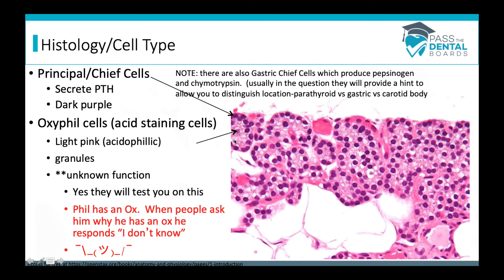Then we have the oxyphil cells, which are acidophilic or acid-staining. They contain granules, and their function is unknown. I've seen exams literally test on the function of oxyphil cells — you just have to know the function is unknown. The way I remember this: I think of a guy named Phil with an ox. When people ask why he has an ox, he just says, 'I don't know.' Oxyphil cells — unknown function.